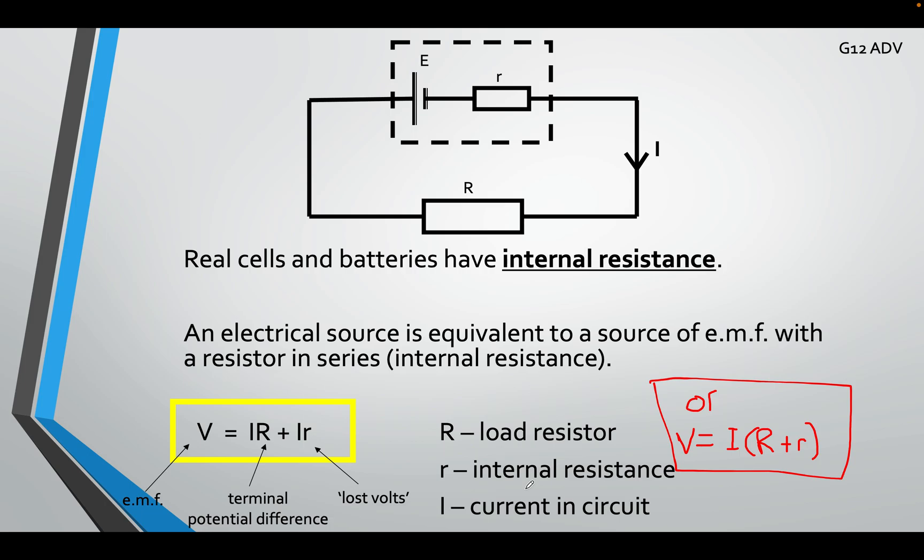This is for grade 12 advanced only. You will also need to deal with internal resistance. Real cells and real batteries have an internal resistance. So even if I said this battery has 2 volts, it can handle 2 volts from the battery, but when I connect it to the circuit, and I use a voltmeter, and I check using a voltmeter, you will actually find, hold on a second, it's lying.